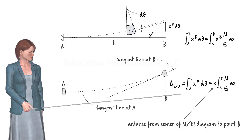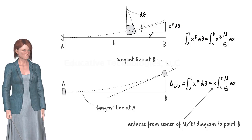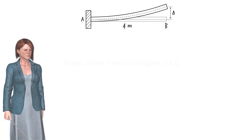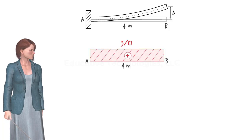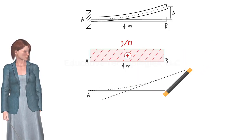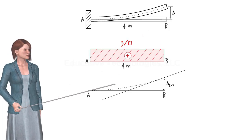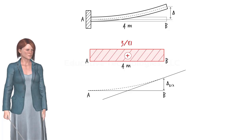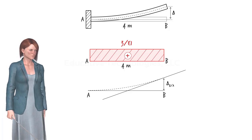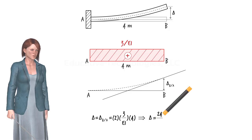Geometrically speaking, the second moment area theorem states that the distance between the two tangent lines measured at B is equal to the area under the M over EI diagram times the distance from the center of the diagram to point B. Let us determine the vertical deflection of our cantilever beam using the second moment area theorem. Here is the M over EI diagram and elastic curve, with tangent lines at A and B. Note that this height is the same as the vertical deflection of the beam at B. Hence, the deflection can be determined by taking the moment of the area under the M over EI diagram about B, giving a deflection of 24 over EI.